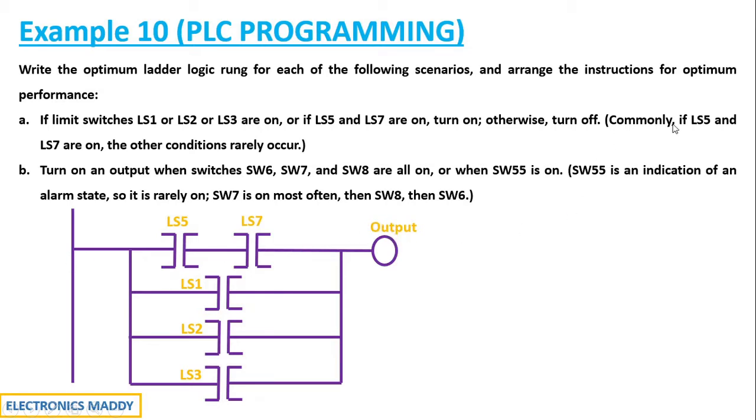Now they have given a condition. Commonly, if LS5 and LS7 are ON, the other conditions rarely occur. If these two are ON, say for example both of them are ON, the output will be high. The output will be 1 in that case. Most of the times what they are trying to say is LS5 and LS7, most of the times if they are ON, irrespective of the other conditions, the output will be high.